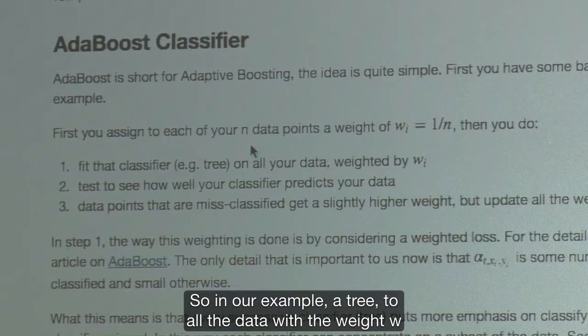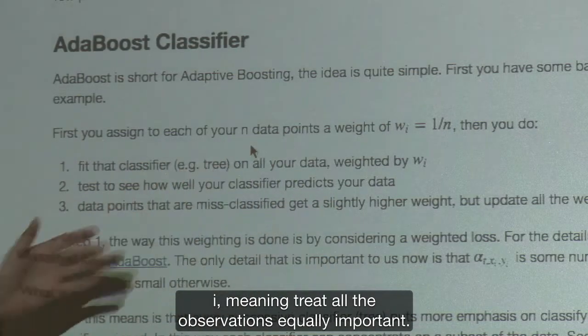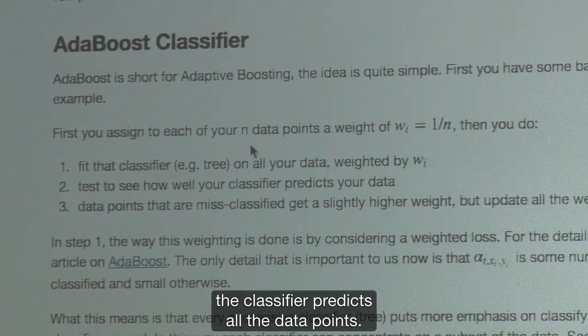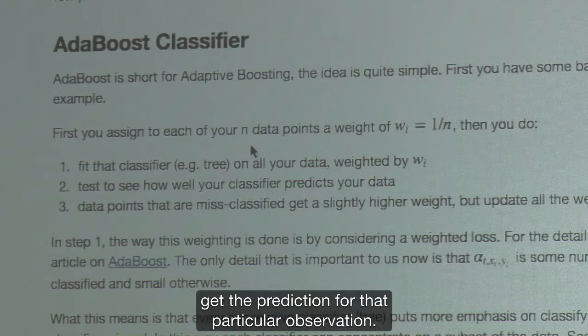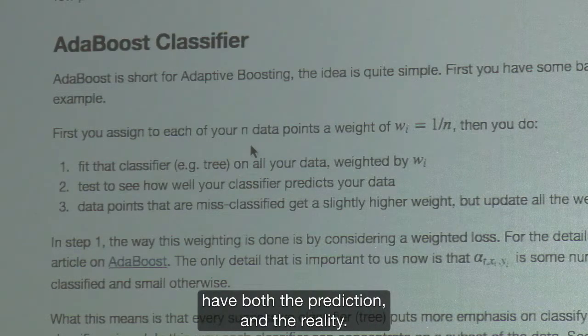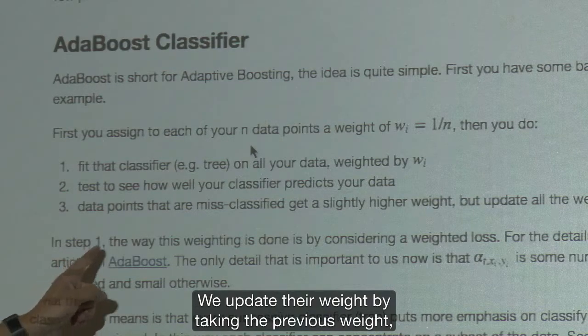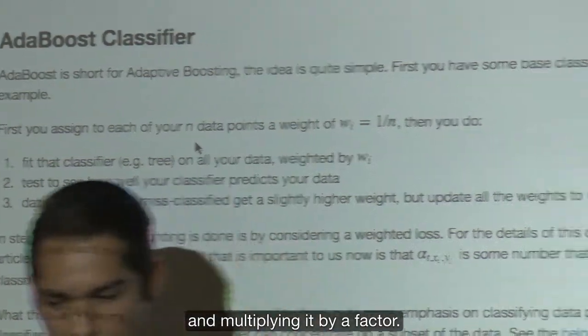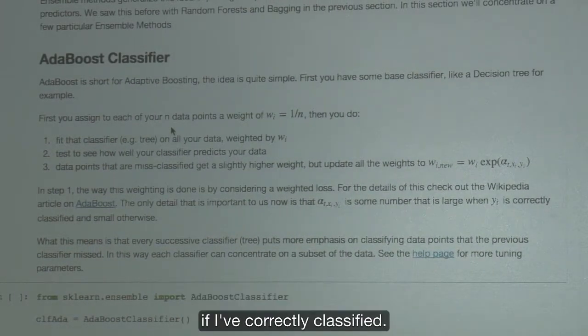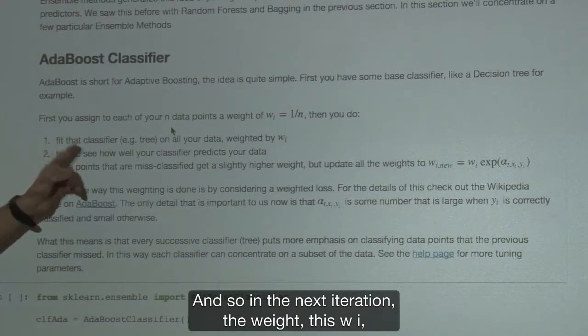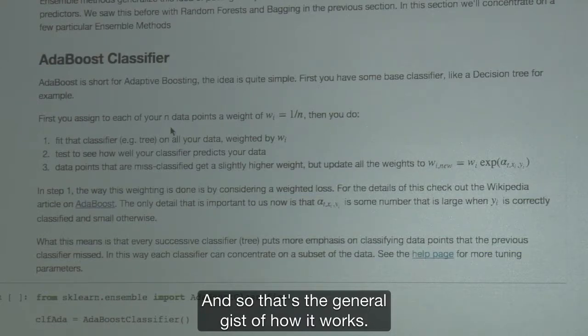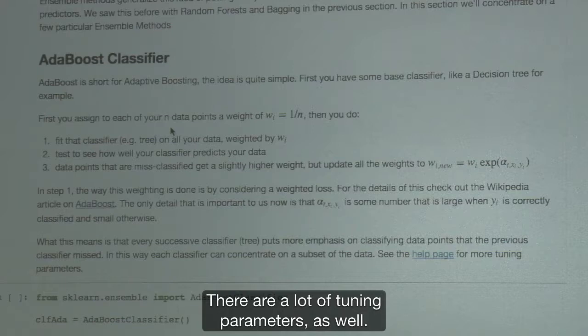So the first step is to fit the classifier. So in our example, a tree to all the data with the weight wi, meaning treat all the observations equally important. And then you can test to see whether or not the classifier predicts all the data points. So you can just run your data through the tree, get the prediction for that particular observation. And then the data points that are misclassified, you know which ones they are because you have both the prediction and the reality. We update their weight by taking the previous weight and multiplying it by a factor. And this factor is just made so that it increases the weight if I misclassified and decreases the weight if I correctly classified.